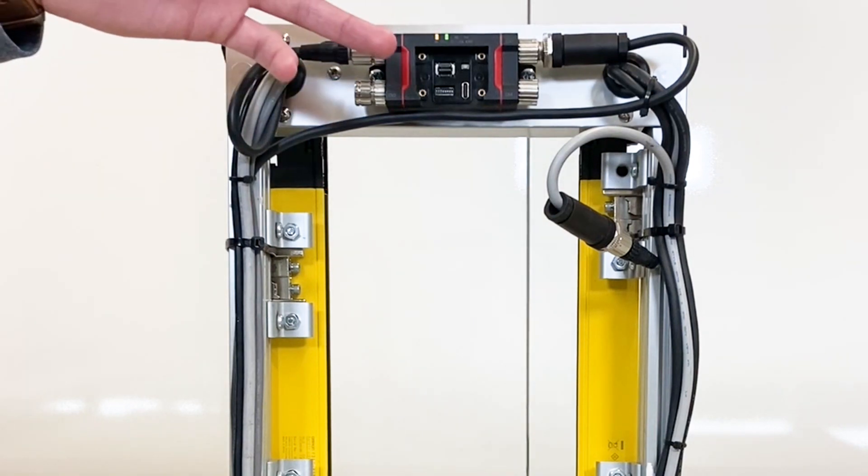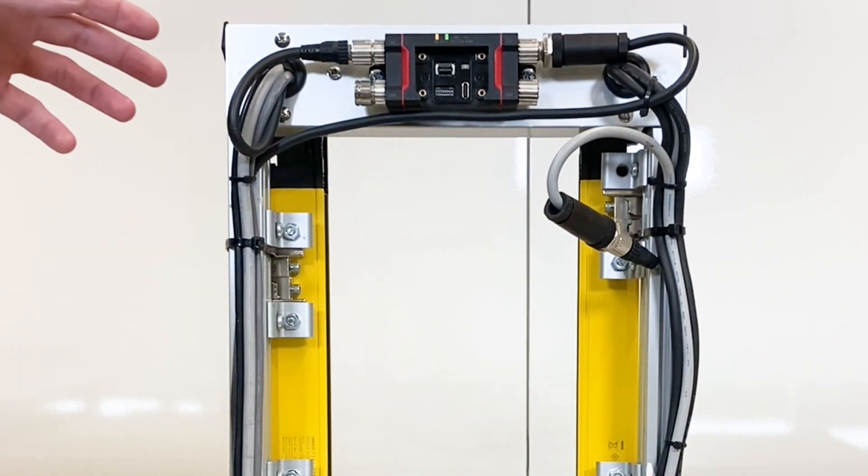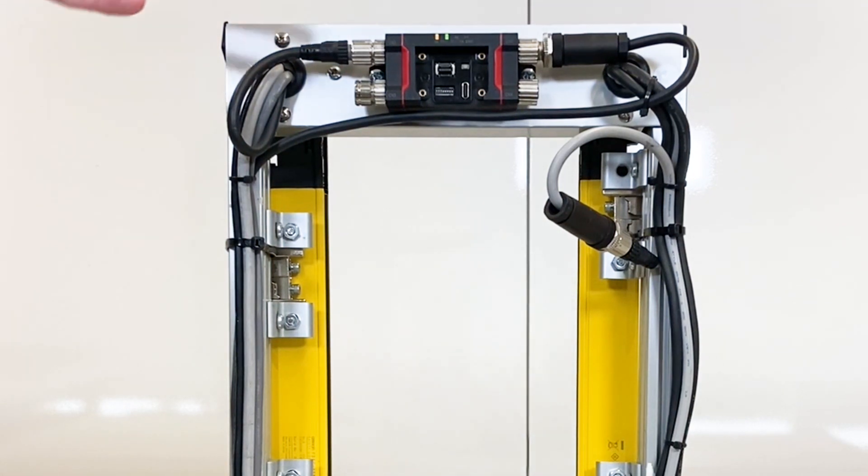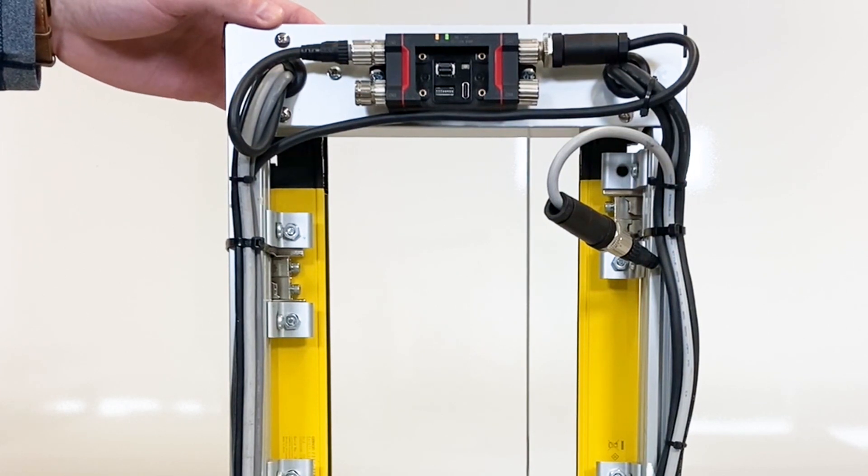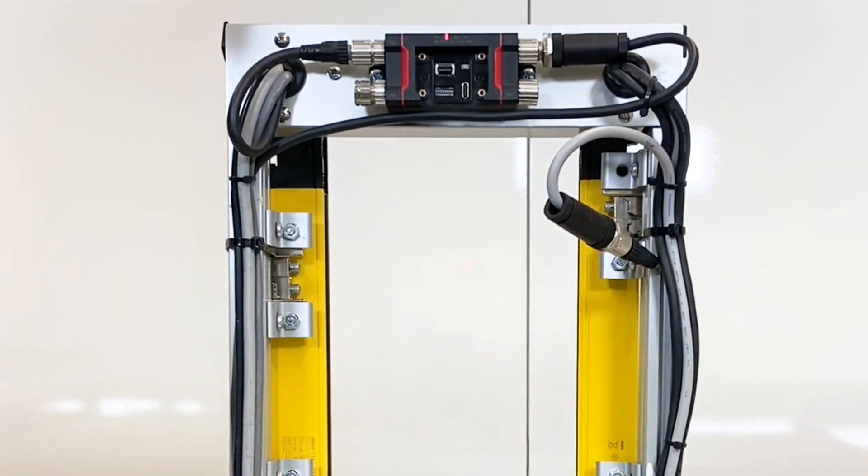If you did receive a red error light, what you want to do is power your system off and check the wiring of your system. But in this state, since everything is good to go, what we want to do is power the system back off, wait a couple seconds, and then power back on again. Now your safety light curtain is good to go.